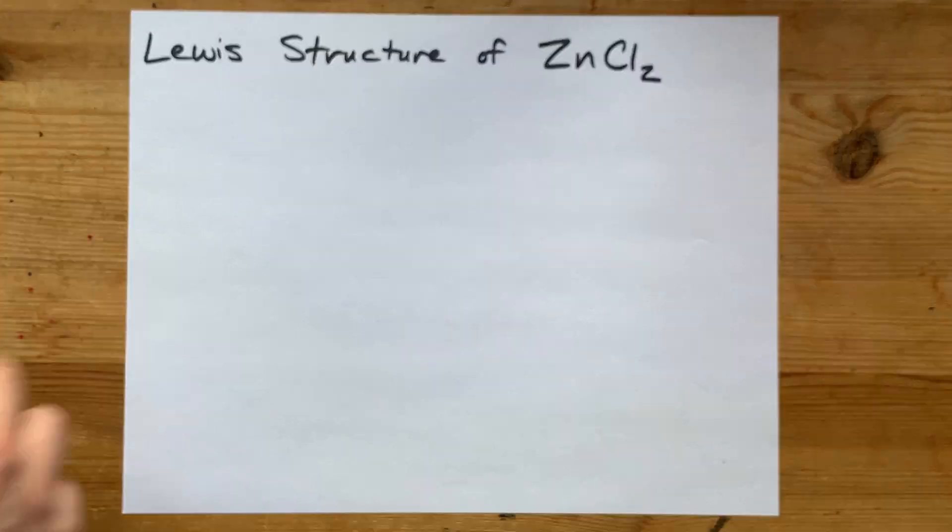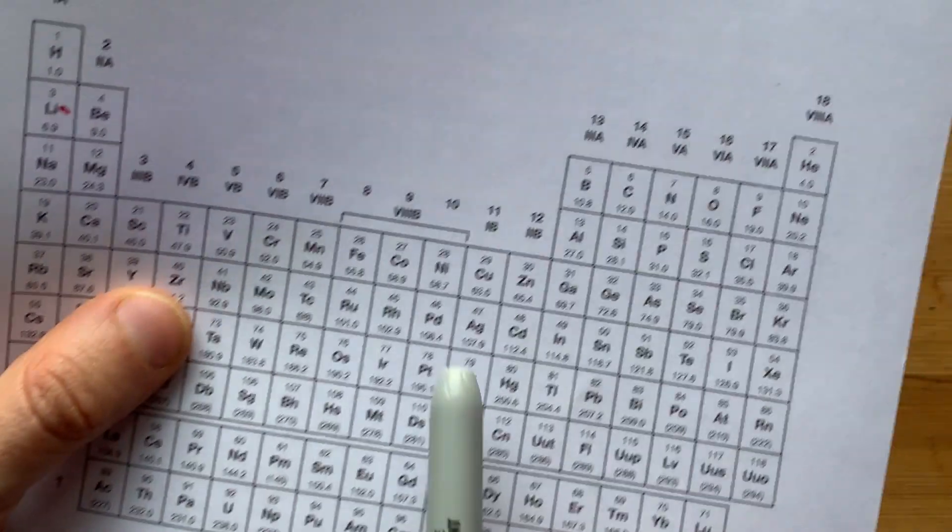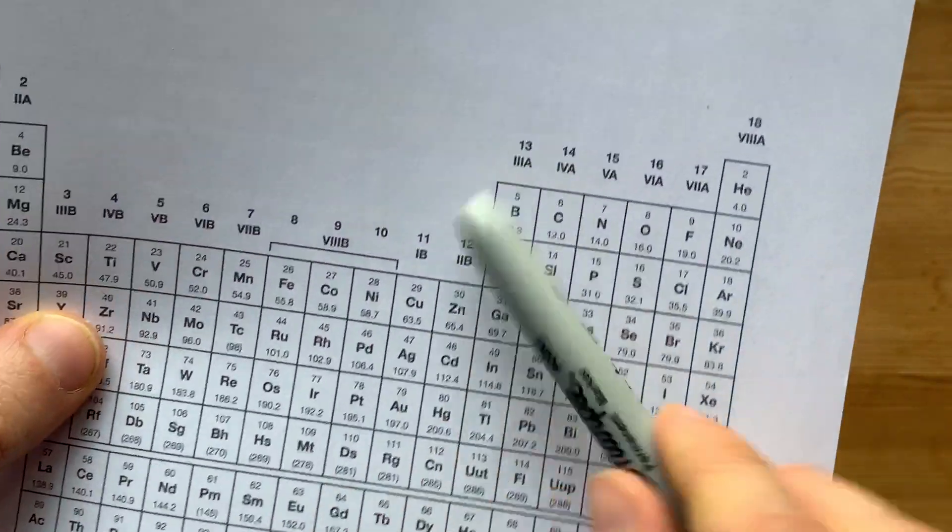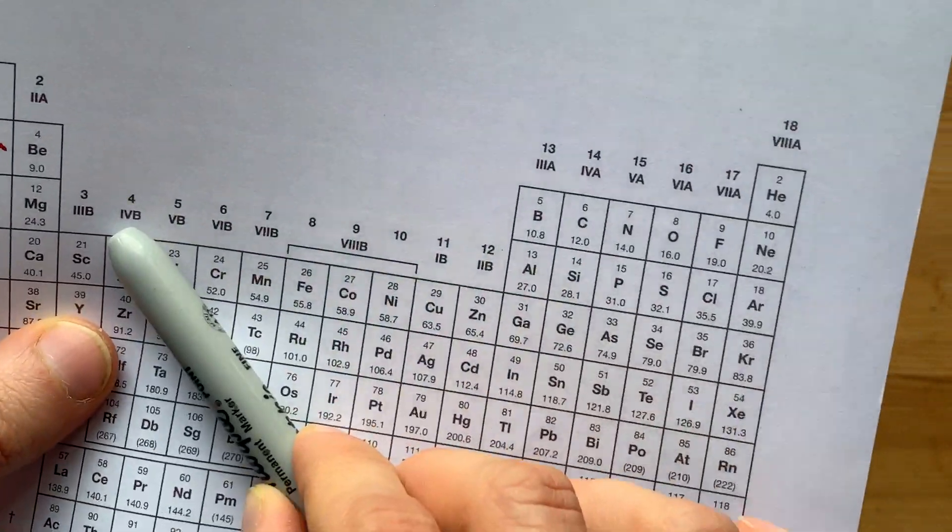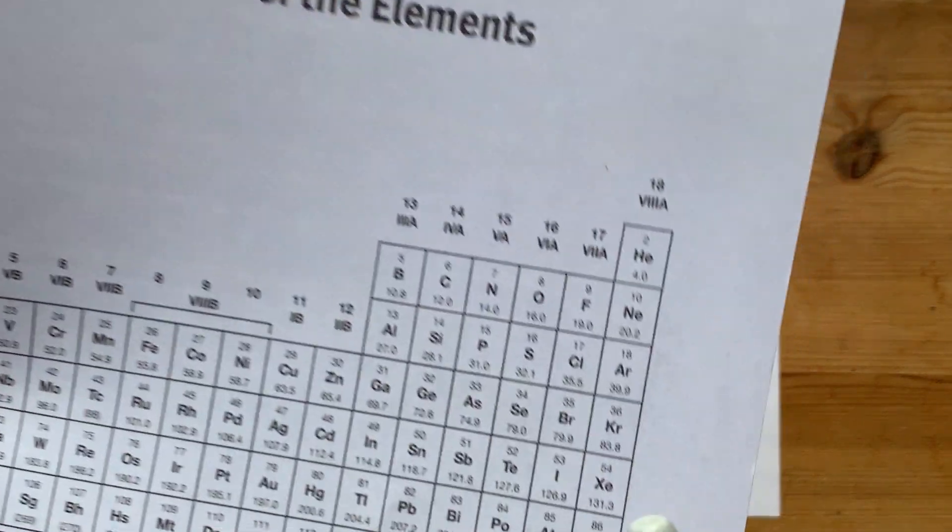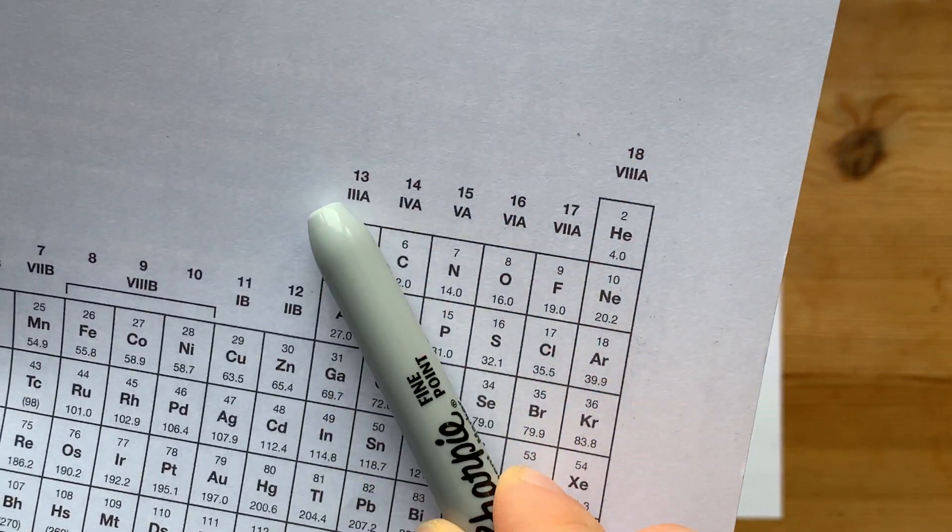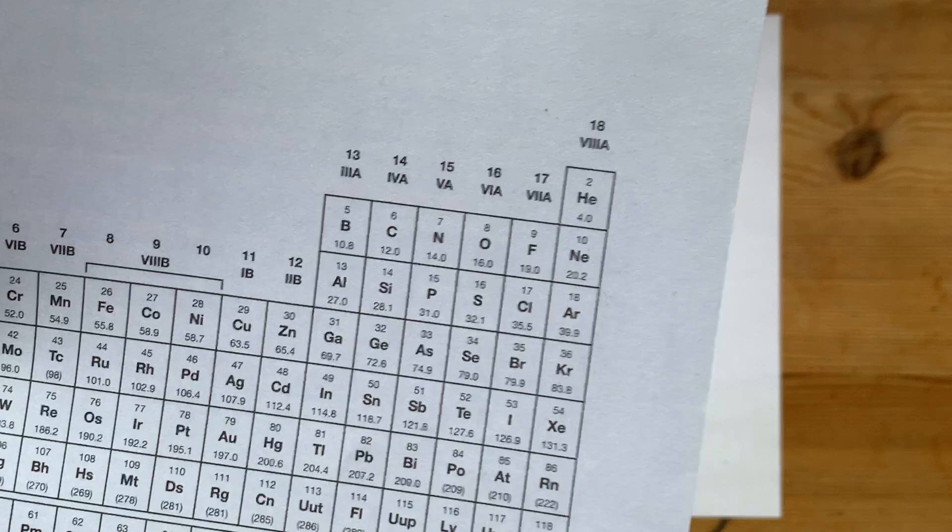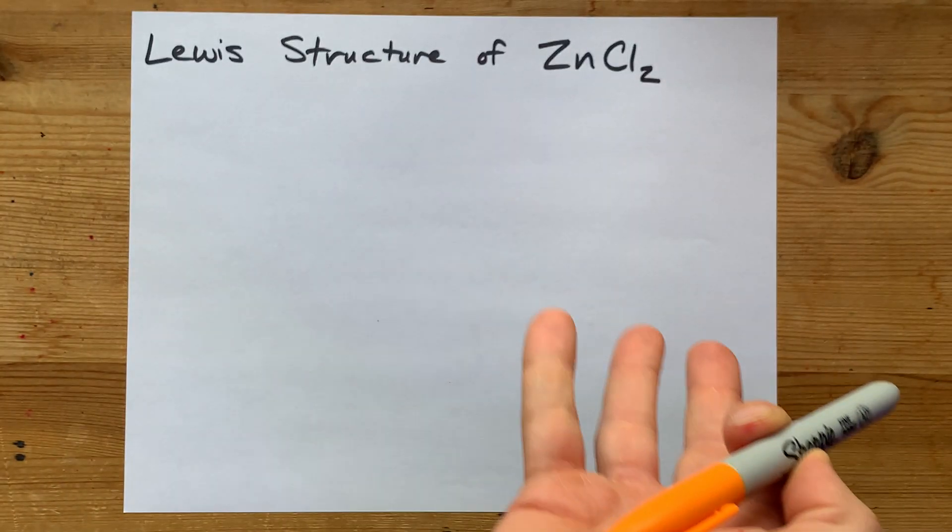Let's draw the Lewis structure for zinc chloride. Zinc is a metal—it comes from the left side of the staircase on the periodic table, where you find metals. Chlorine is a non-metal from the upper right corner of the table, where you find non-metals.